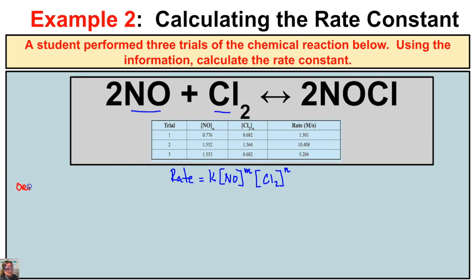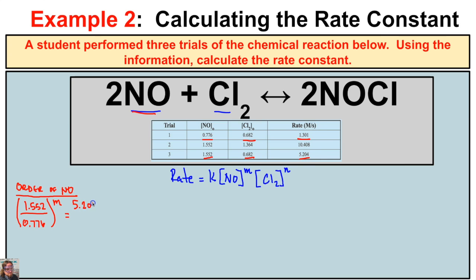To find the order of NO, we hold Cl2 constant in Trial 1 and Trial 3 and compare the rates. Taking the higher concentration of NO, 1.552, divided by the lower, 0.776, raised to the M power, we set this equal to the higher rate, 5.04, divided by the lower rate, 1.301. Calculating, we get 2 to the M equaling 4. Since 2 squared equals 4, M equals 2 — so NO is second order.